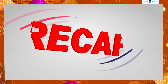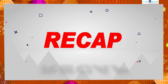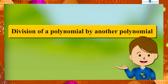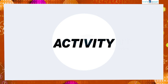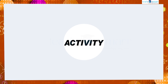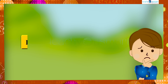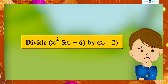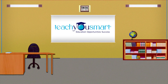Let's recall what we discussed today: division of a polynomial by another polynomial. Before winding up, let's check how much you understood by doing an activity. Divide x² − 5x + 6 by x − 2. That's all for now — see you all in the next class.